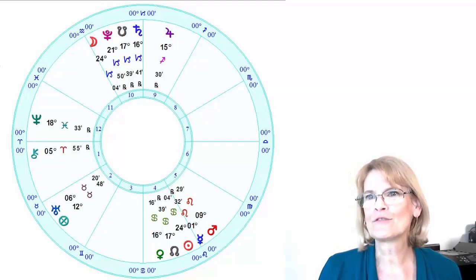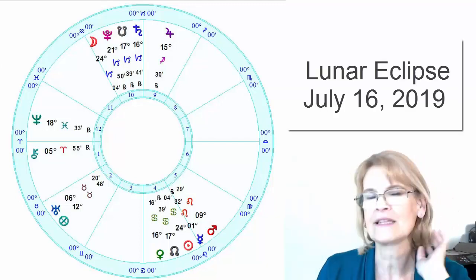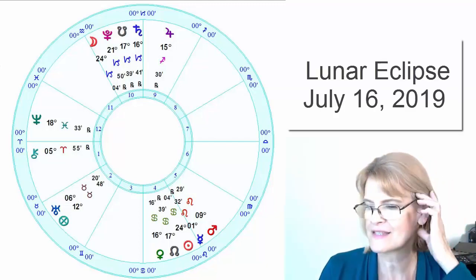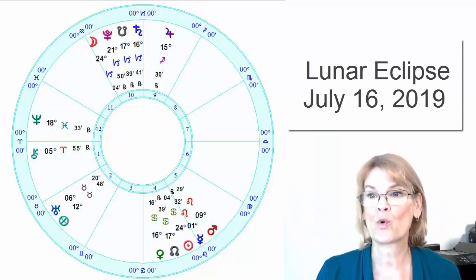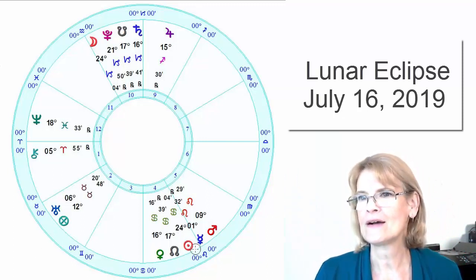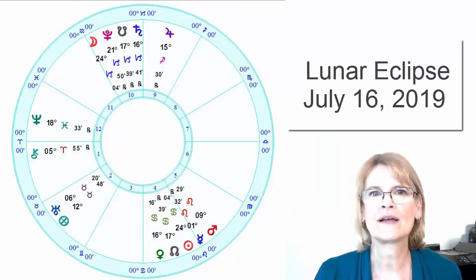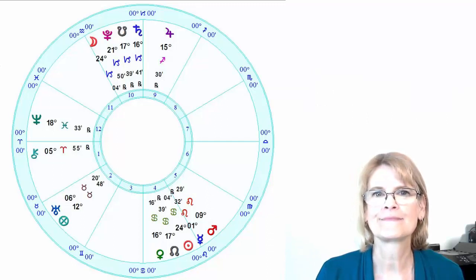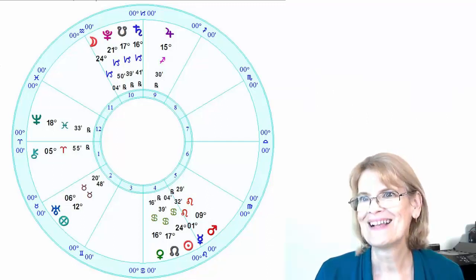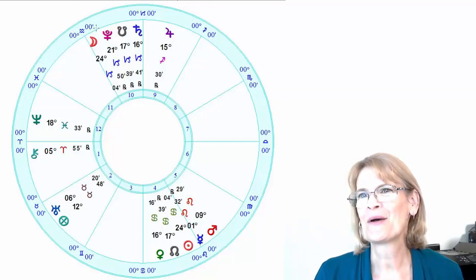Anyway, today we are looking at the lunar eclipse. The lunar eclipse happens on July 16th. It's going to be at 24 Capricorn. So I need a pen tool. Okay, so here it is.